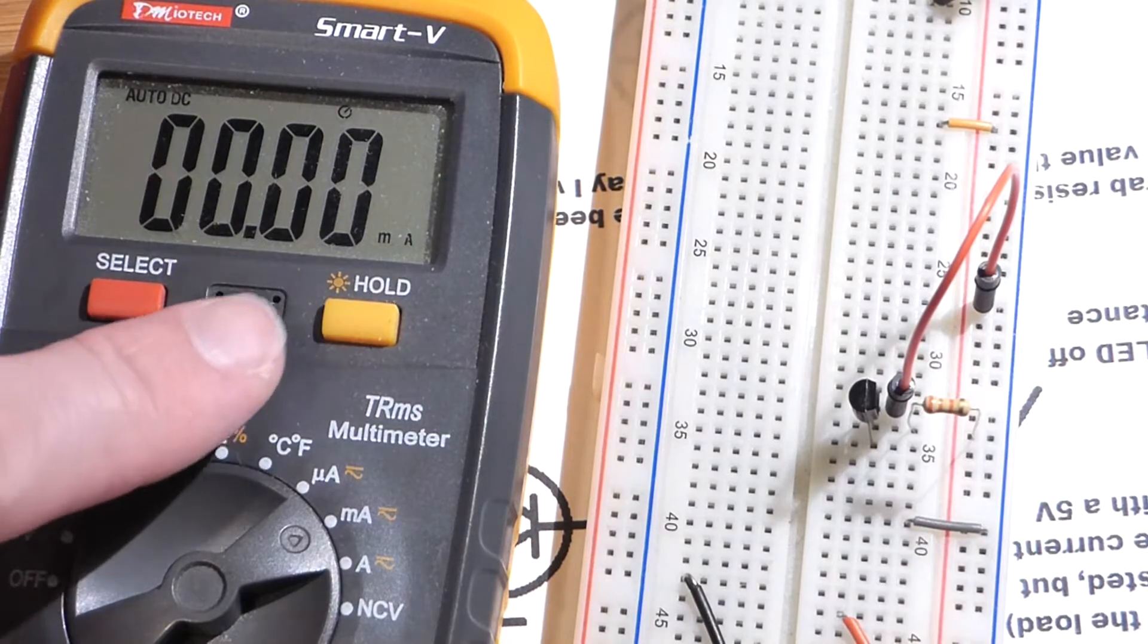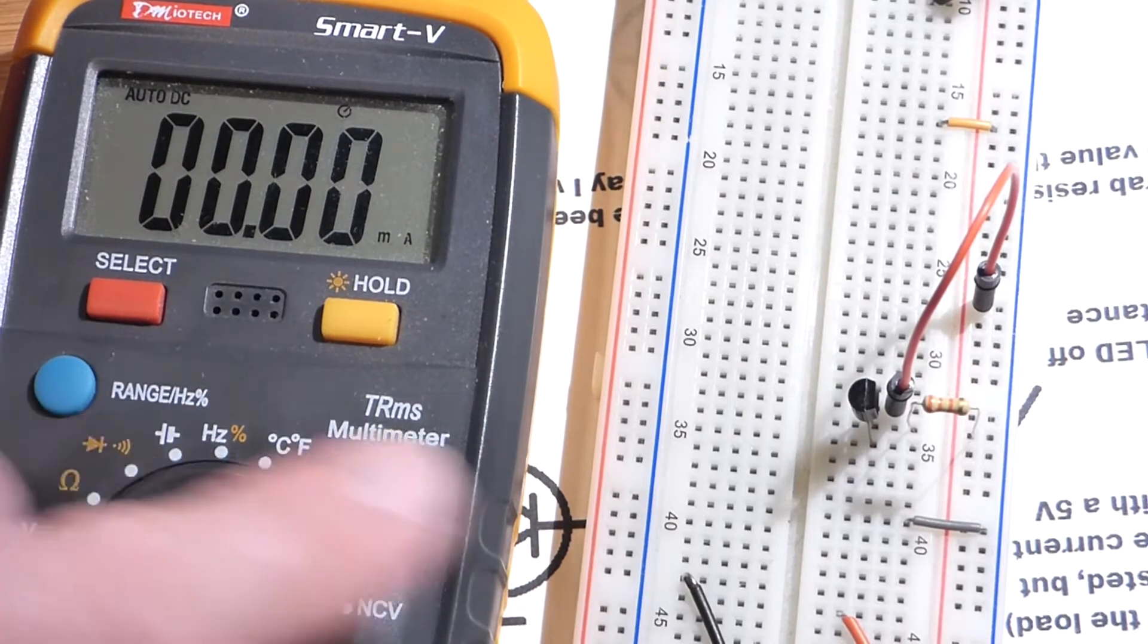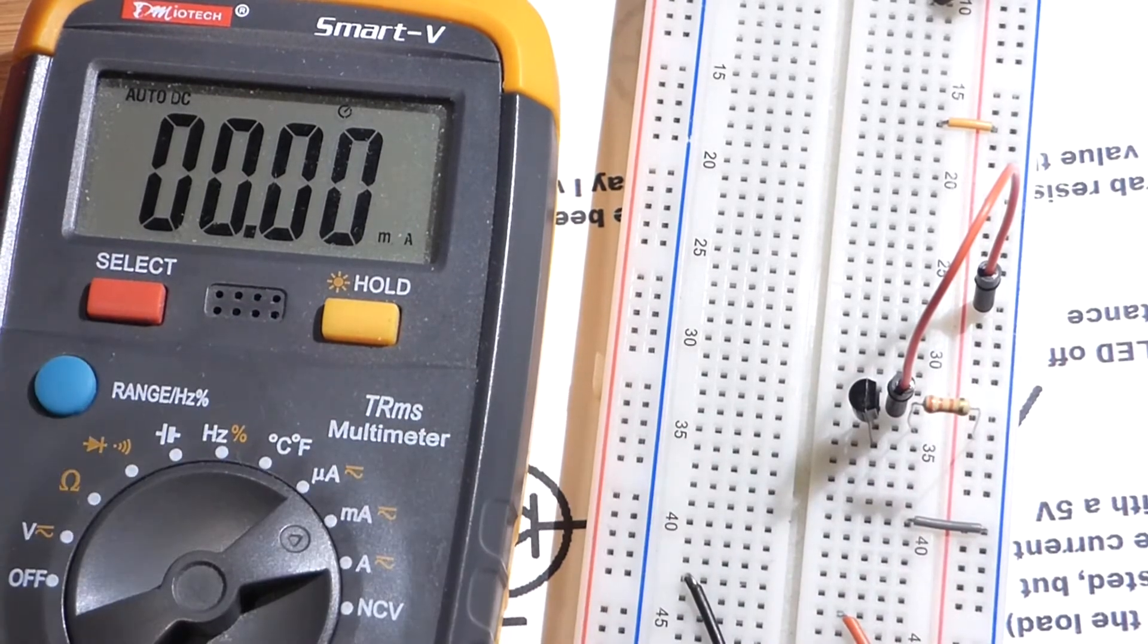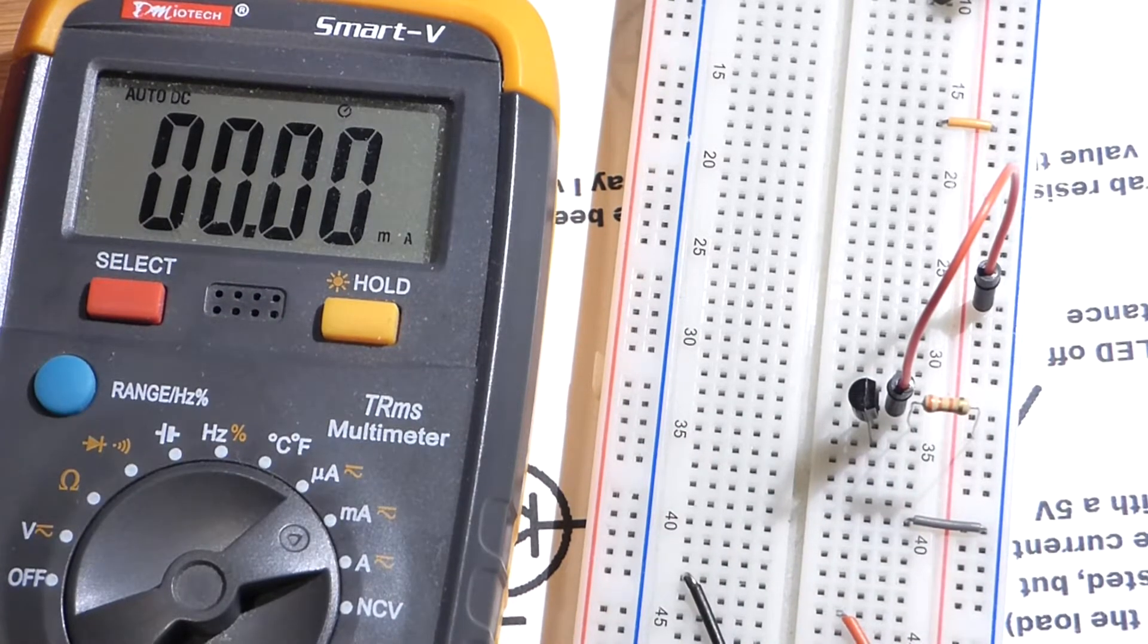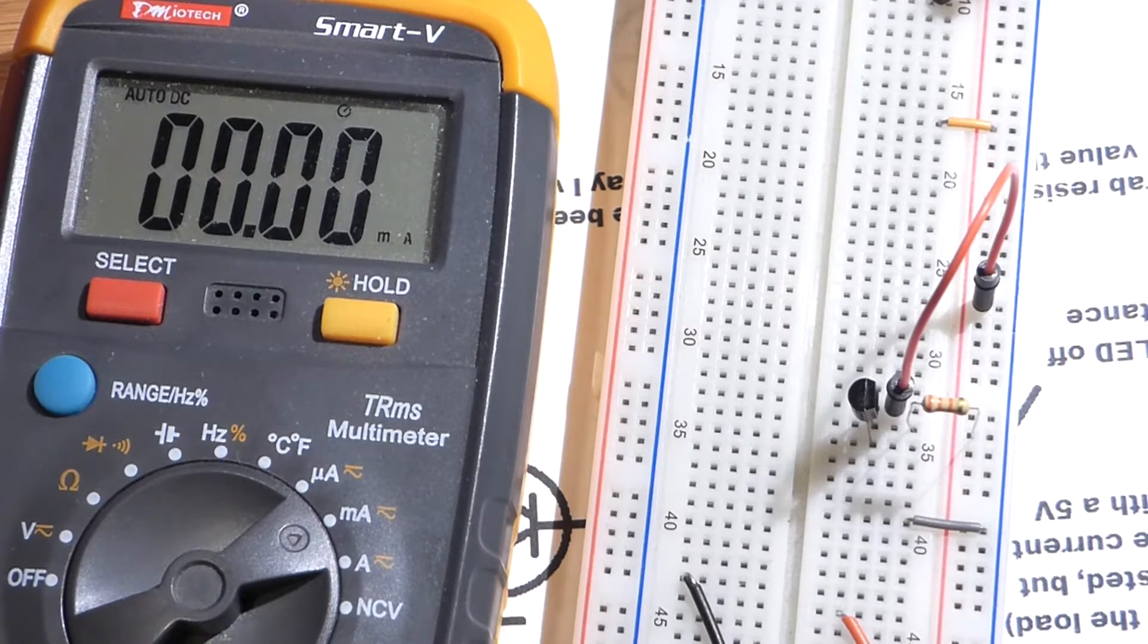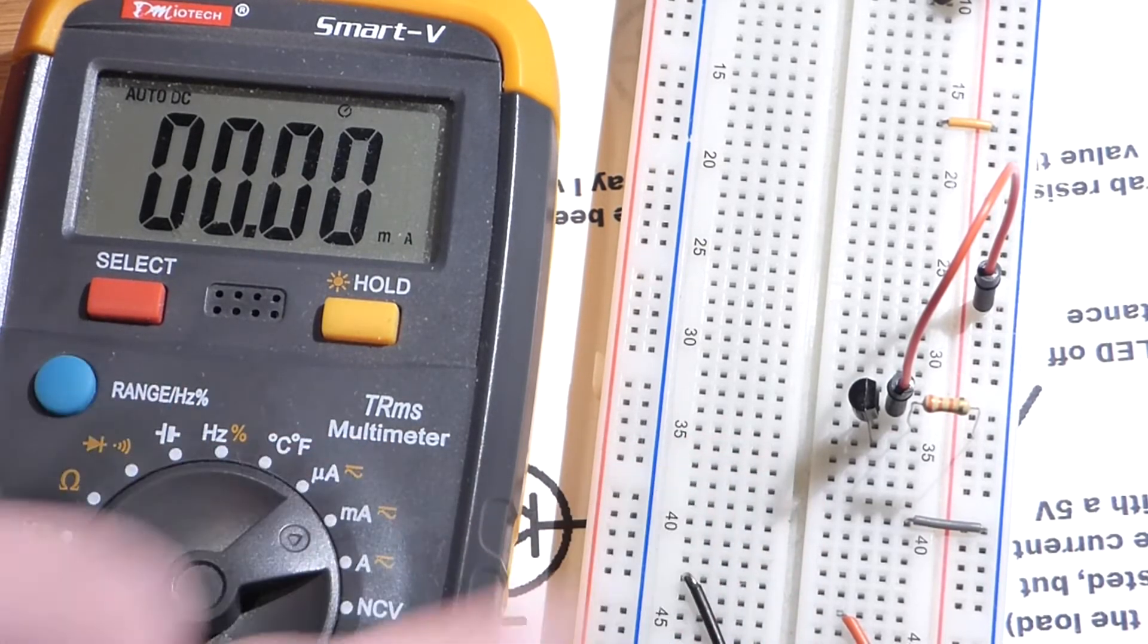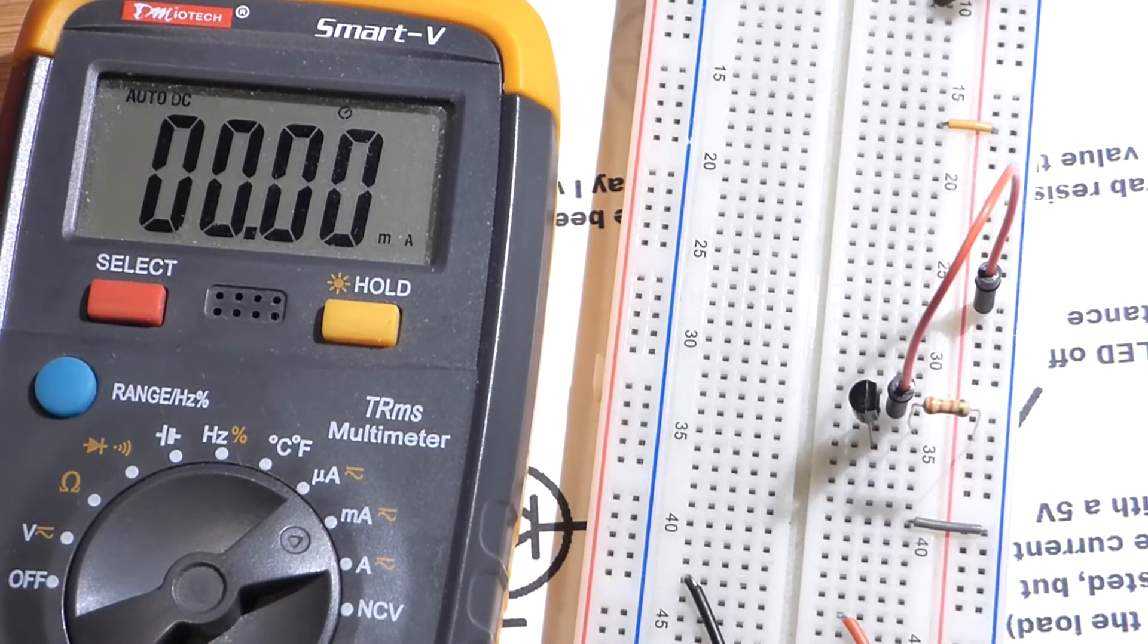Ultimately, we were getting more than 300 times the collector to emitter current than base to emitter current. I don't know where it would have stopped, but this is good enough for us right now. It's just a demonstration to prove a point. It's not a working circuit or anything.